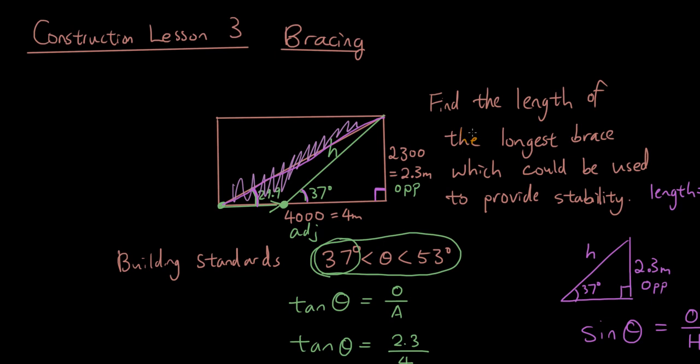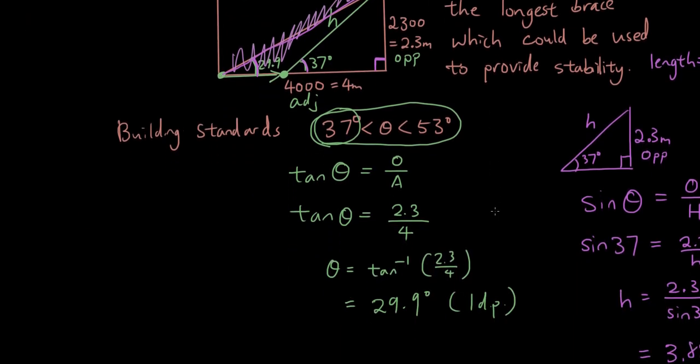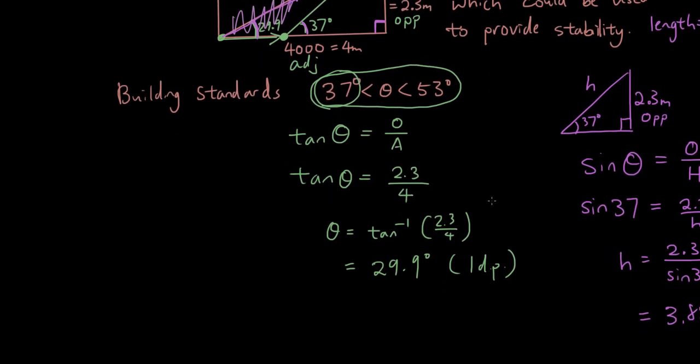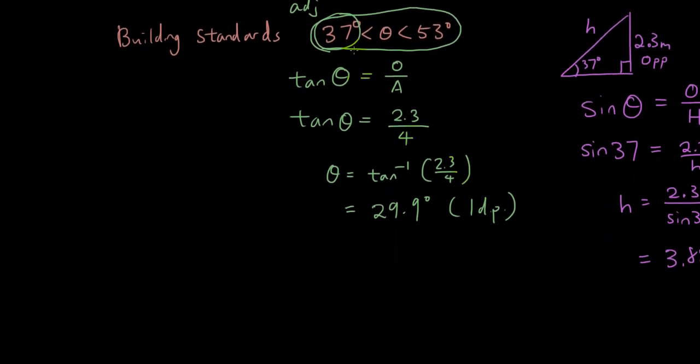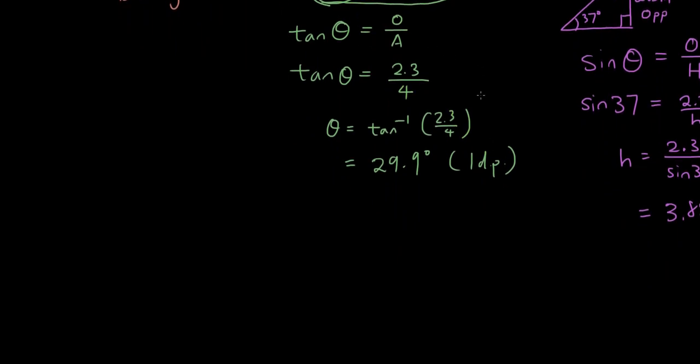Last lesson we started calculating the brace for a wall, and this wall didn't have any sort of obstacle. We could just put the brace wherever we wanted as long as it satisfied the criteria of theta being 37 to 53 degrees.